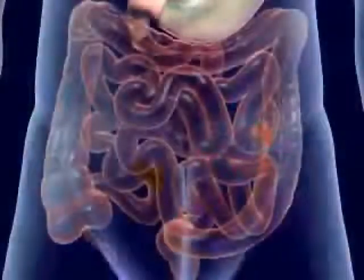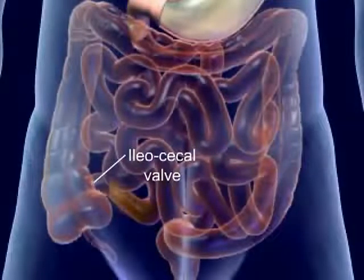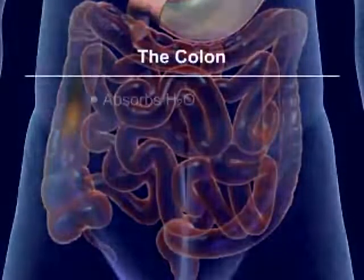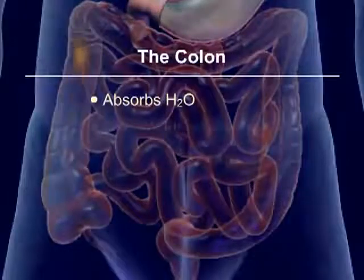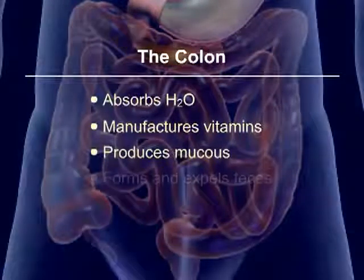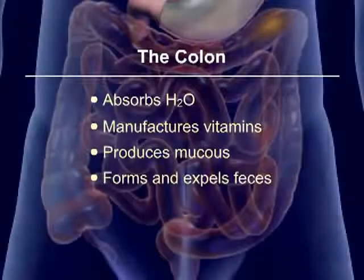The undigested food reaches the ileocecal valve and enters the large intestine or colon. The colon absorbs water, manufactures vitamins, produces mucus, and forms and expels feces.